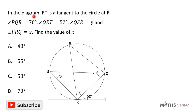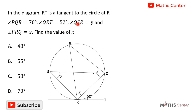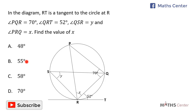In the diagram, RT is a tangent to the circle at R. Angle PQR is equal to 70 degrees, angle QRT is equal to 52 degrees, angle QRT is equal to Y, and angle PRQ is equal to X. Find the value of X. This is a multiple choice question, so we will solve the question and pick the correct option.